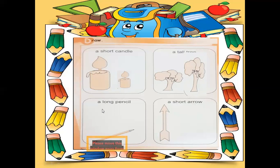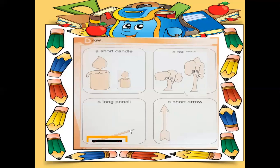In the third exercise, they are asking about a long pencil. One pencil is already shown here, and they say draw the same pencil but longer than the mentioned one. So draw a long pencil. Look at this pencil - this pencil is longer than this one.